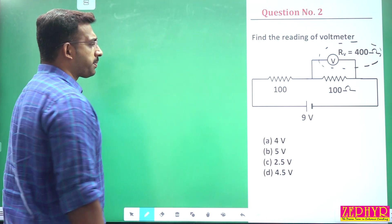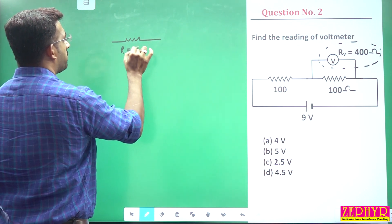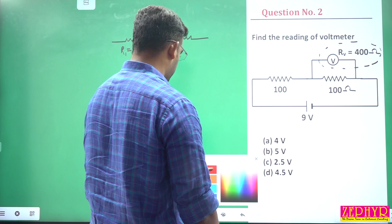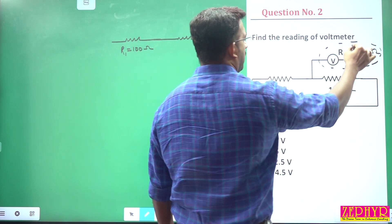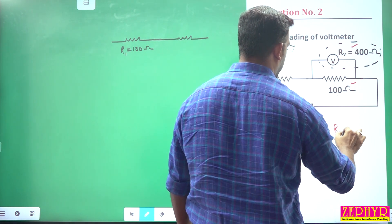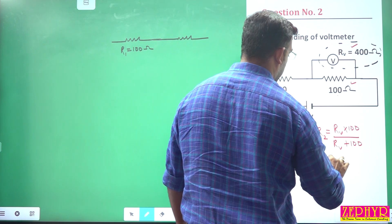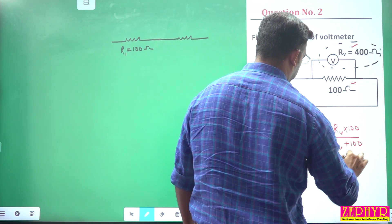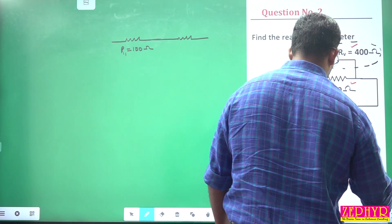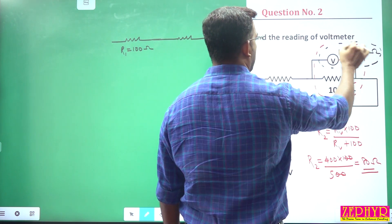We have R1 equal to 100 ohm. We have a combination of resistances: 400 ohm and 100 ohm. R2 is Rv × 100 divided by (Rv + 100). Substituting: Rv × 100 divided by 500 gives us 400 divided by 500, which is equal to 80 ohm.